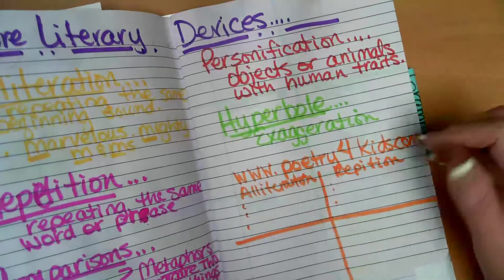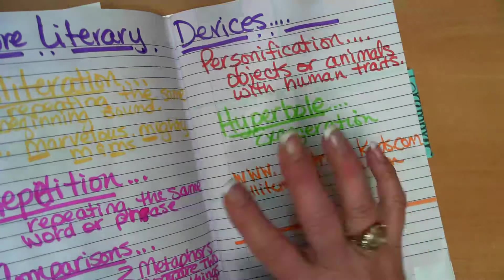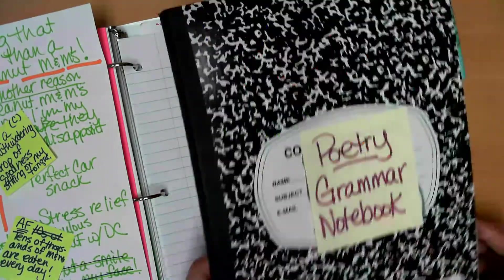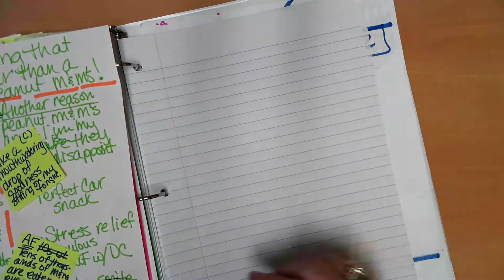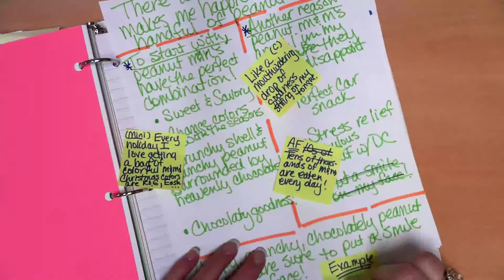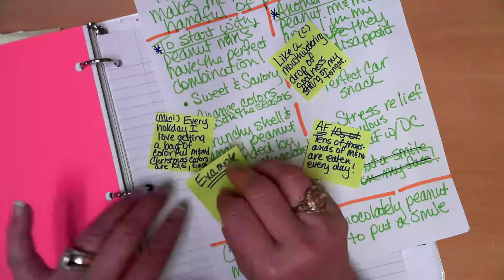Next thing, alliteration. Throw some alliteration in there. Some repetition for emphasis. Throw some repetition in there. Comparisons we've talked about. Personification. Throw that in there. Hyperbole. Exaggeration. Throw that in there. That's also a good thing to do. So keep this in mind. You can use the wall. You don't always have to get your poetry notebook out.